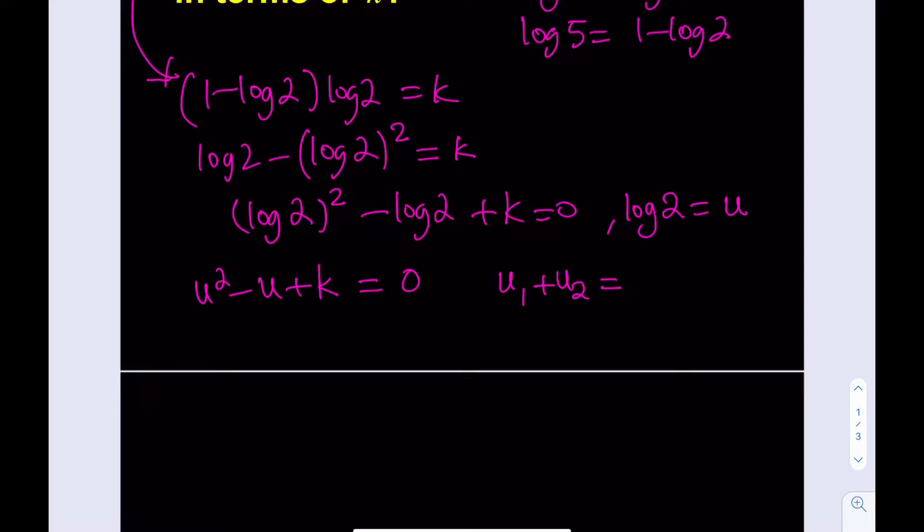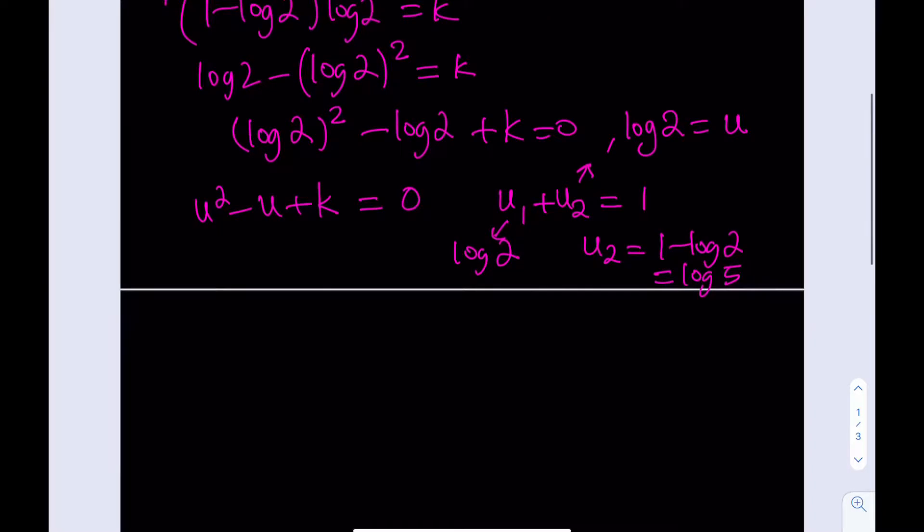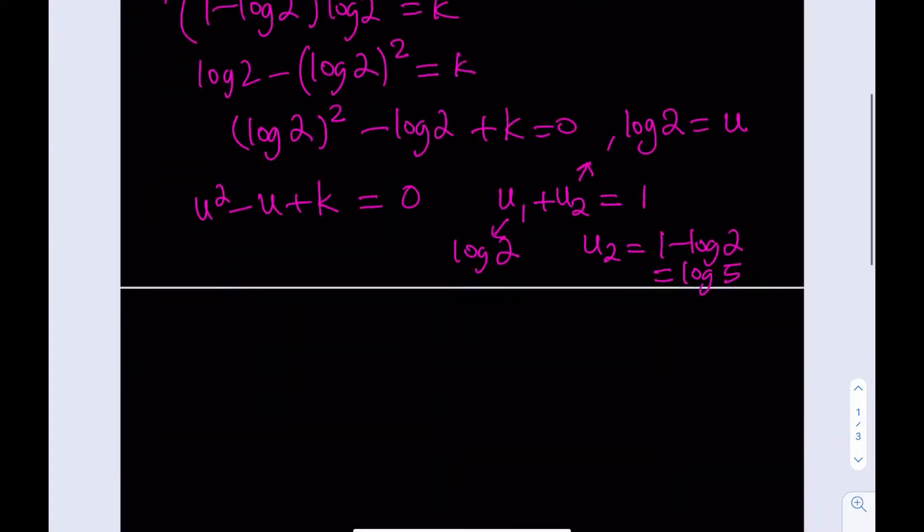u1 plus u2 equals positive 1. We know that one of the roots is log 2. If you solve for u2, you get u2 equals 1 minus log 2, which equals log 5. We already know that log 2 and log 5 add up to 1. So by solving this quadratic equation, we're finding both solutions in terms of k.